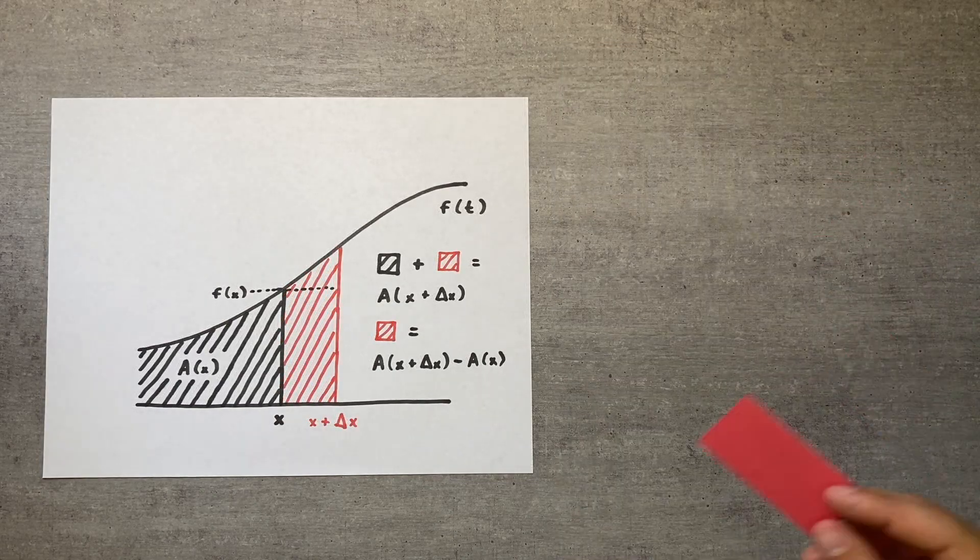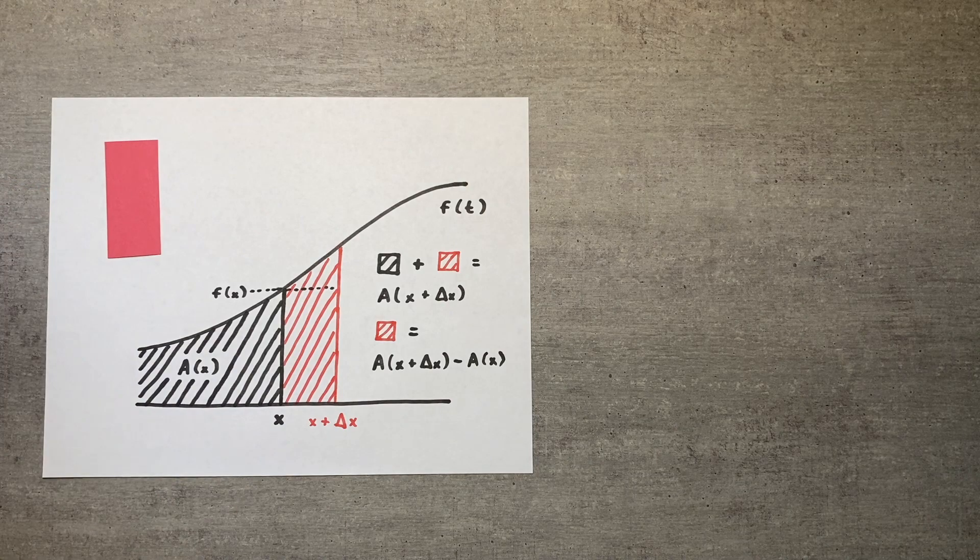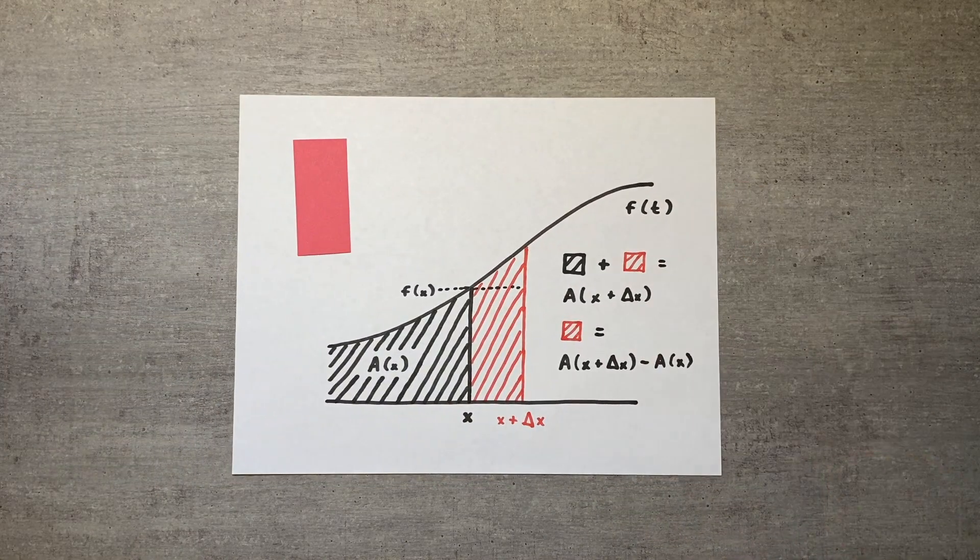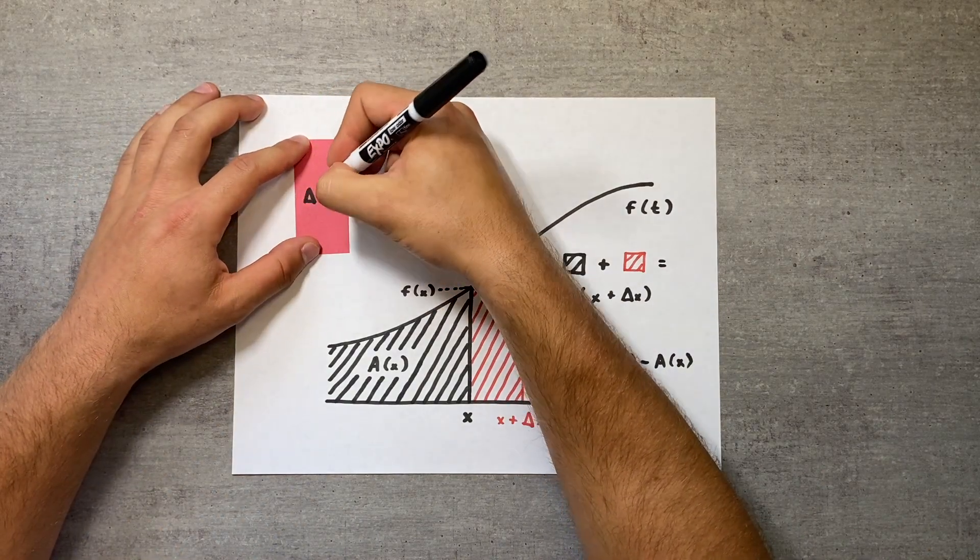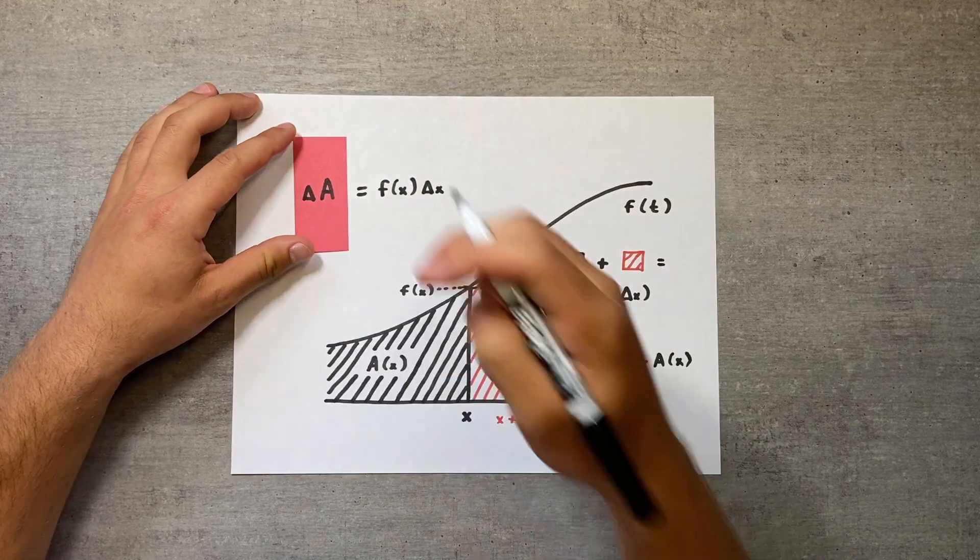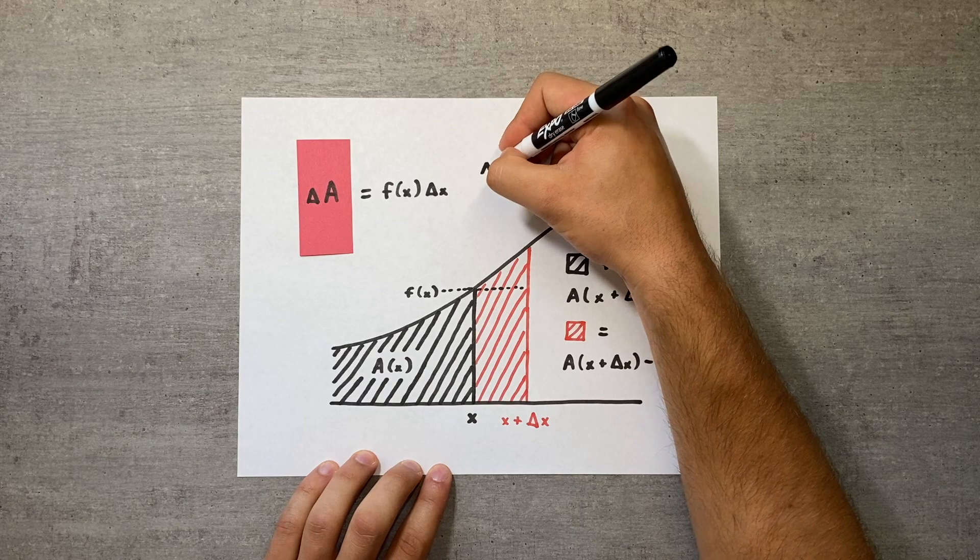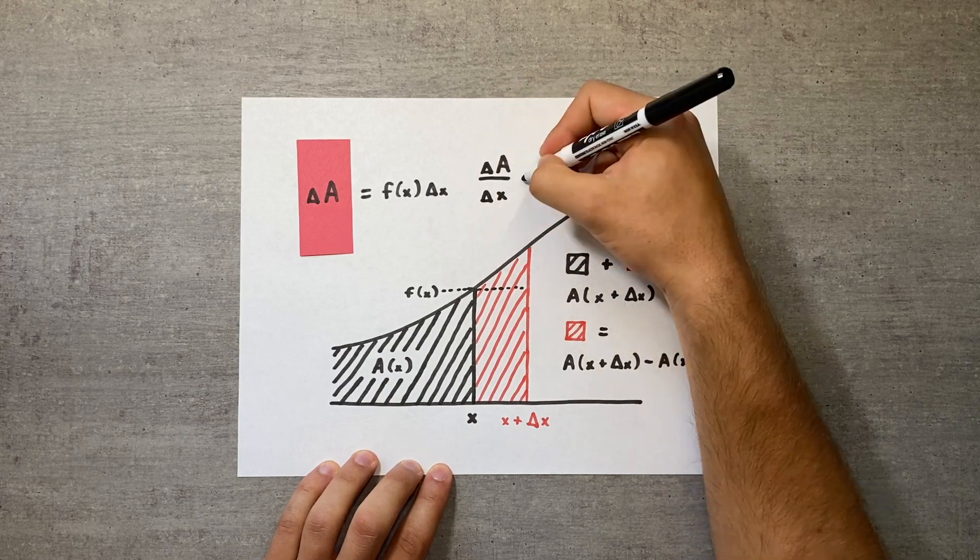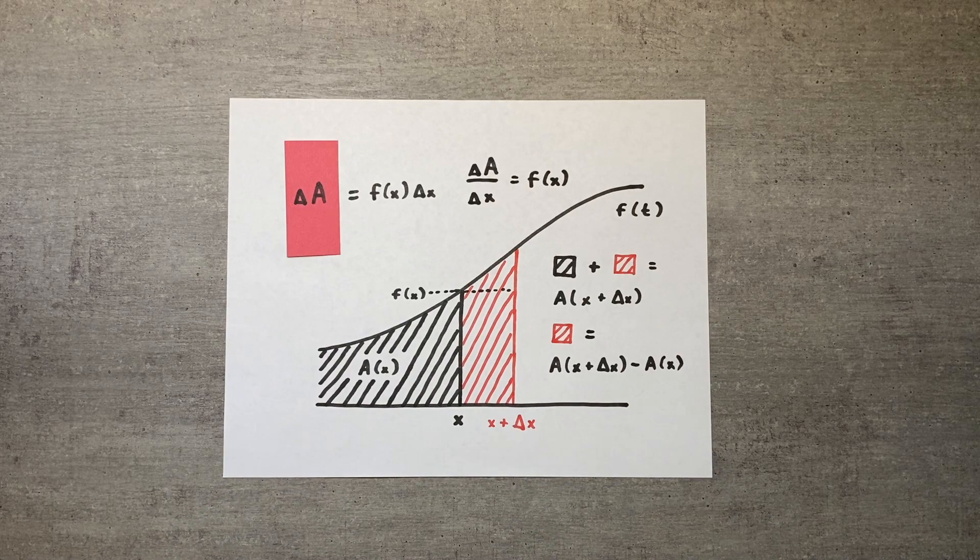When I first saw this proof, it felt like the construction was pulled out of thin air to magically generate the desired formula. However, it is really just a way to clarify what the vertical line in proof 1 actually was, the limit of an increasingly thin rectangle. Examining this rectangle in proof 2 revealed that the difference in area divided by the difference in x approaches the height of the function, which is a more precise version of the claim we made in proof 1.